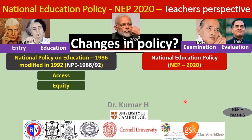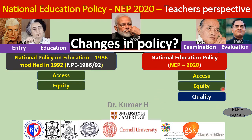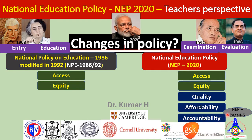The NEP 2020 retains access and equity as fundamentals and adds three more: quality of education, affordability (cost must not be a barrier), and accountability — fixing responsibility on the system and persons delivering education. These five mantras form the foundation of the new policy's design.